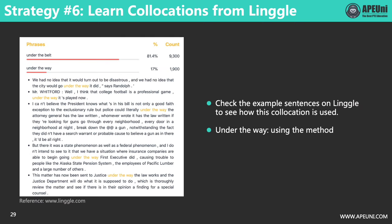Let's focus on 'under the way' and 'under the belt.' We can click on the phrase to check sentences containing 'under the way' to see how this collocation is used. For example: 'We had no idea that the city would go under the way it did,' and 'College football is a professional game under the way it's played now.' From these sentences, we get a general idea that 'under the way' means using the method of how something is done.